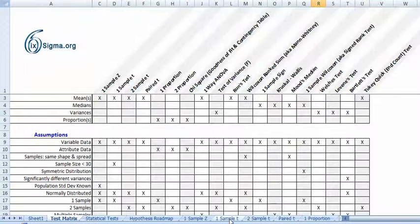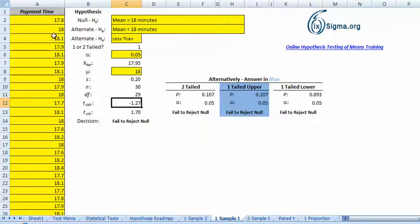So let's go over to the one sample t. The mechanics of it are you lay in your values here in the yellow colored cells. Up here we want to construct our hypothesis statements. In this case, I'm going to make the statement that the mean of the population is equal to 18 minutes, and the alternate statement is that in fact it's less than 18 minutes. So that's a less than type test which creates a one tail test.